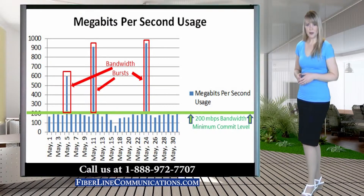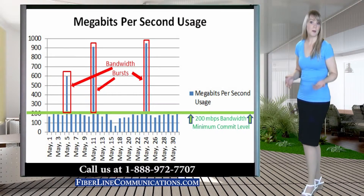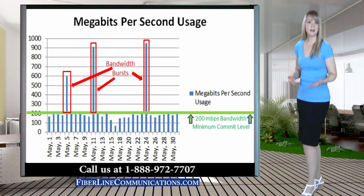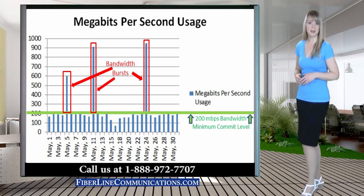With burstable bandwidth, the customer pays a fixed monthly rate for the bandwidth for which they commit, plus the amount that they spike over their minimum commitment. For all bandwidth utilized when they burst above their minimum commit rate, the customer pays per Mbps at the rate per meg they have agreed to pay for their minimum commitment.